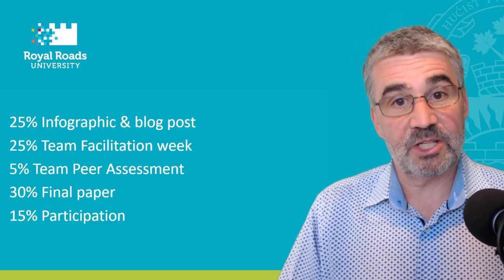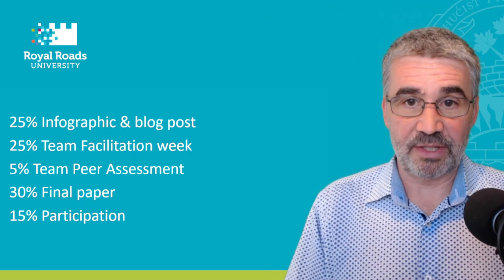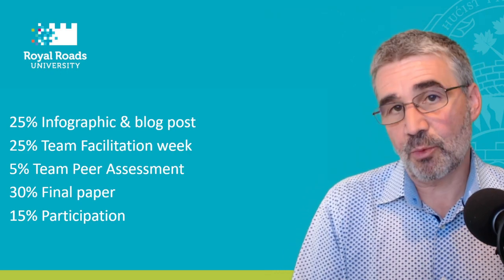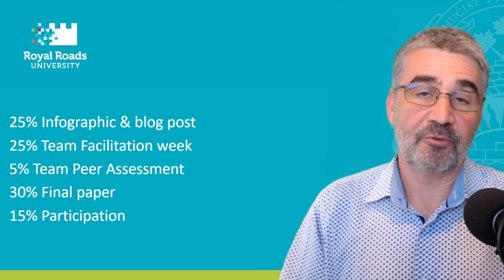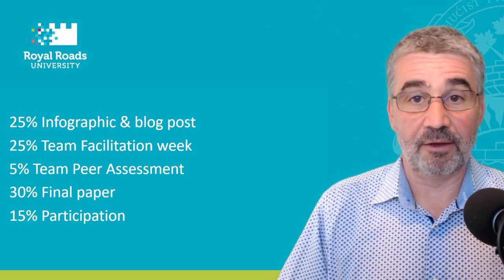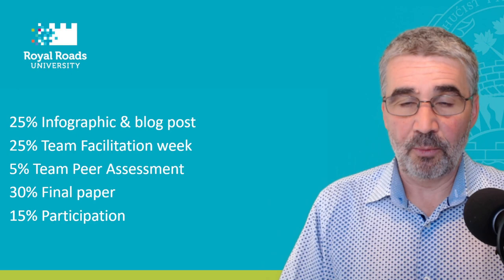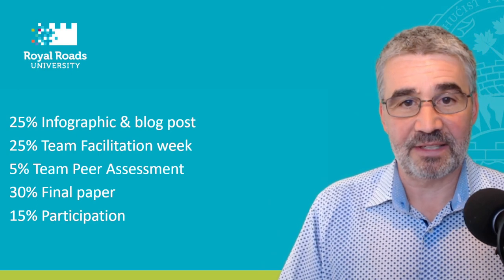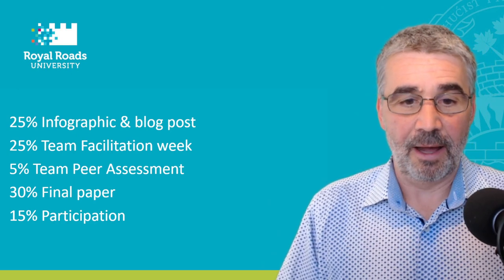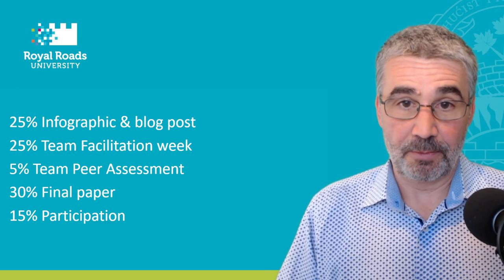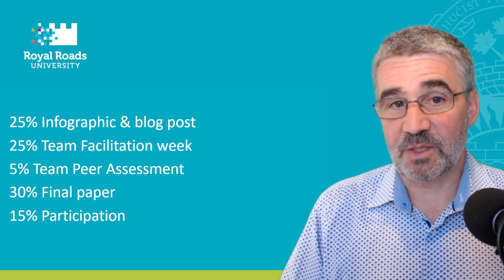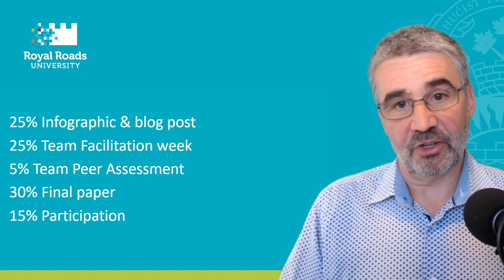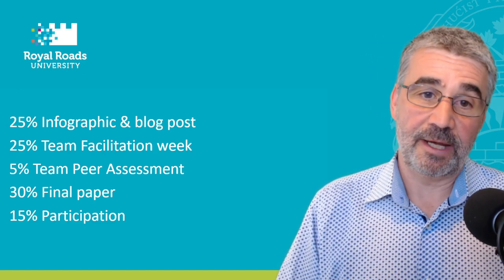In terms of assessment, 25% of your grade is going to be based on the infographic and the blog post in unit one. Another 25% of your grade comes from the design and facilitation of your facilitation week, with a small 5% team peer analysis of your facilitation group. 30% of your grade is based on your final reflective paper, and the final 15% is your participation grade.